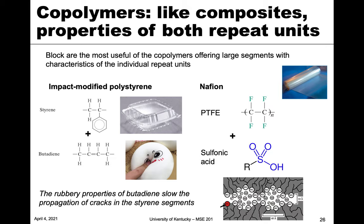One of the big reasons why we do this is because a copolymer is like a polymer composite — it allows us to vary or combine the properties of both repeat units. It gives us properties of both, so we can tailor for an application based on liking the properties of this one plus the properties of that one.